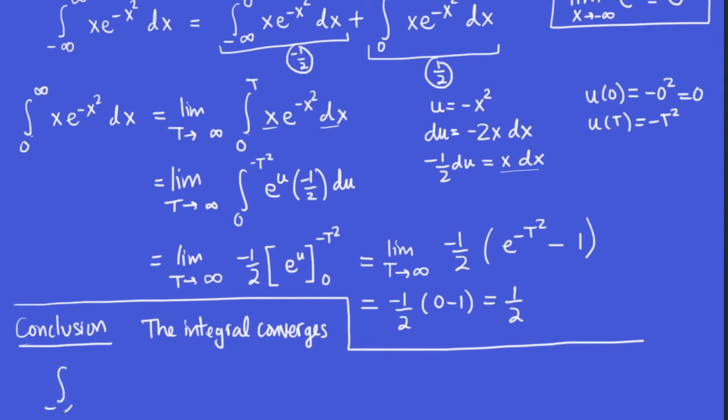And what is the value of the integral? Well, the integral from minus infinity to infinity of x e to the minus x squared dx is equal to the value of this first integral, which is negative one-half, plus the value of the second integral, which is one-half. And what does that give us? Zero. So this integral is equal to zero.